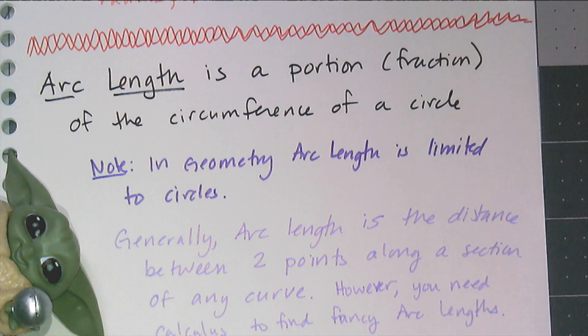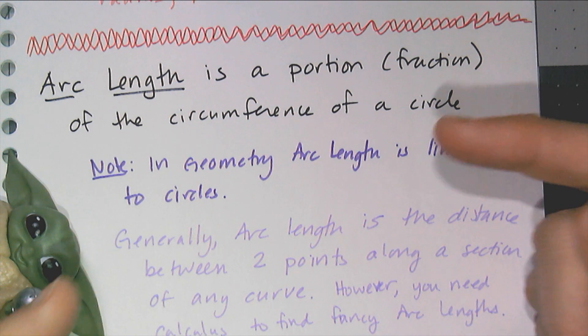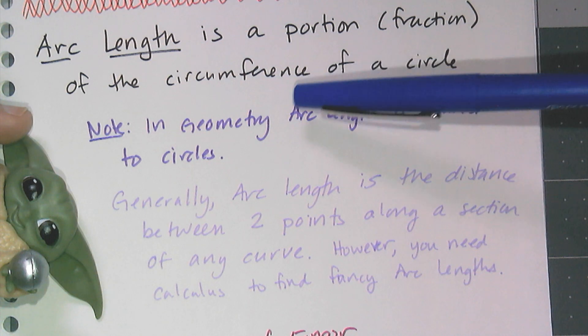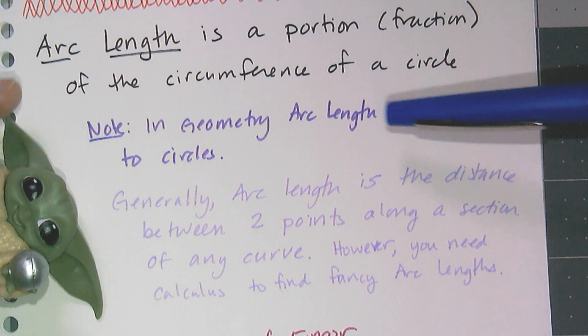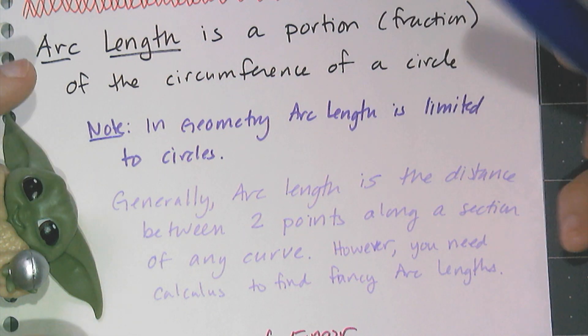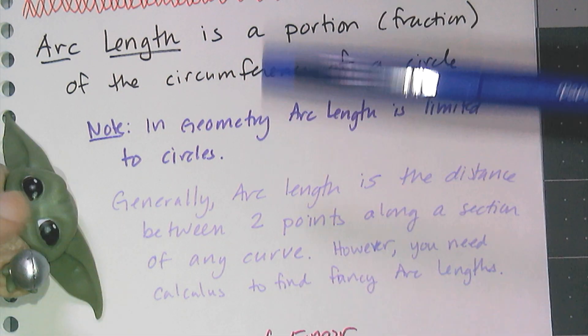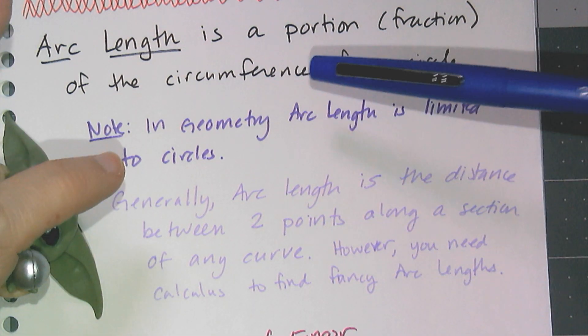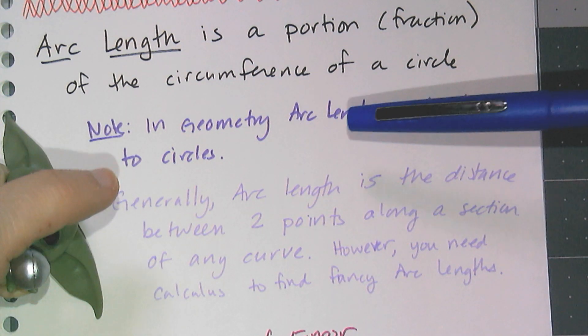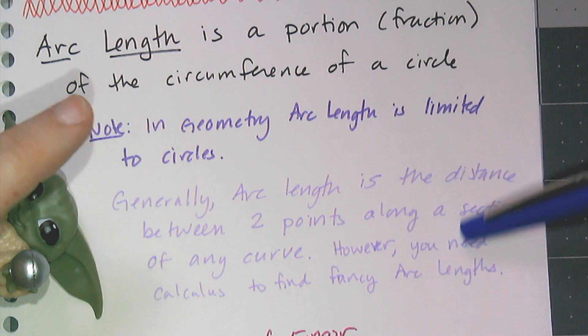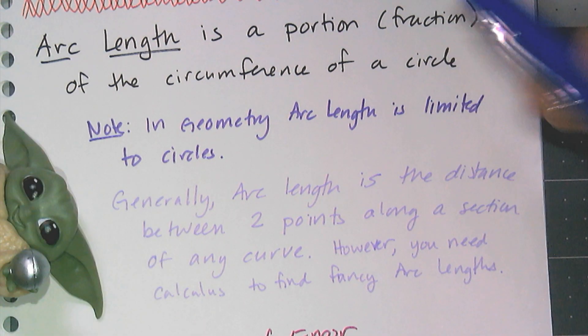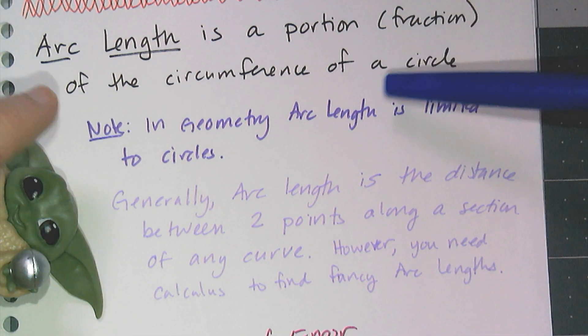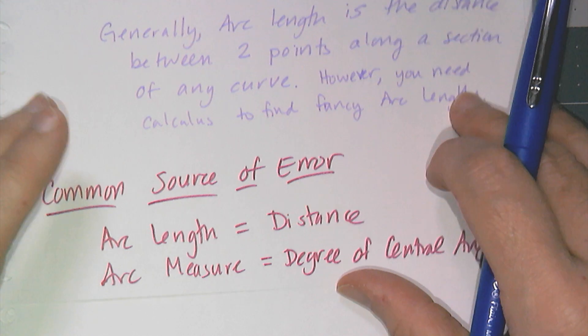So now it's time to talk about arc length. Arc length is a relatively simple concept—it is just a portion or a fraction of the circumference of a circle. I need you to note that in geometry, we are going to use the word arc length exclusively for circles, so arc length is going to be a portion of a circle. Generally speaking in mathematics, though, arc length is actually a generic term and it is just the distance between two points along any curve. So it doesn't have to be a circle—it could be a spiral, something wavy, a parabola. However, in order to find those arc lengths you kind of have to know calculus, so we're going to avoid that and stick with the circle definition of arc length.